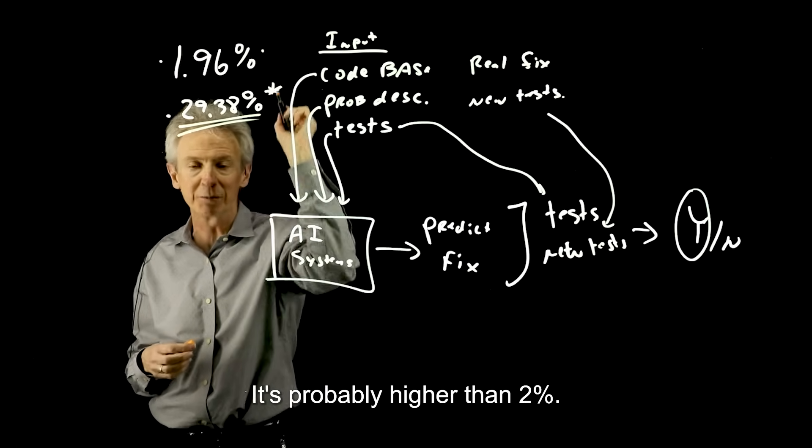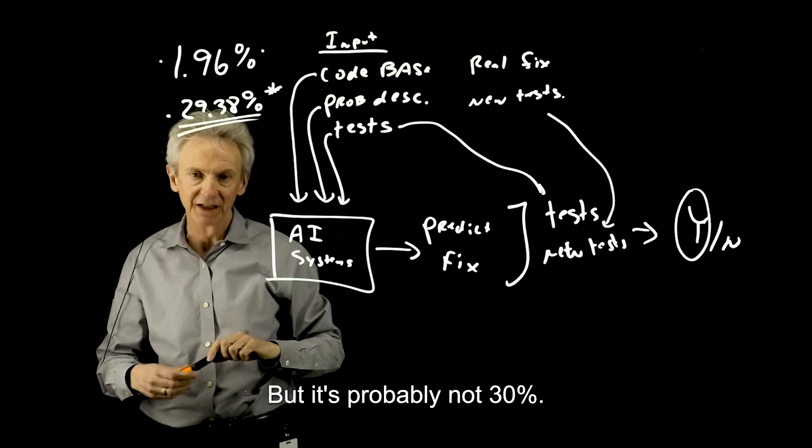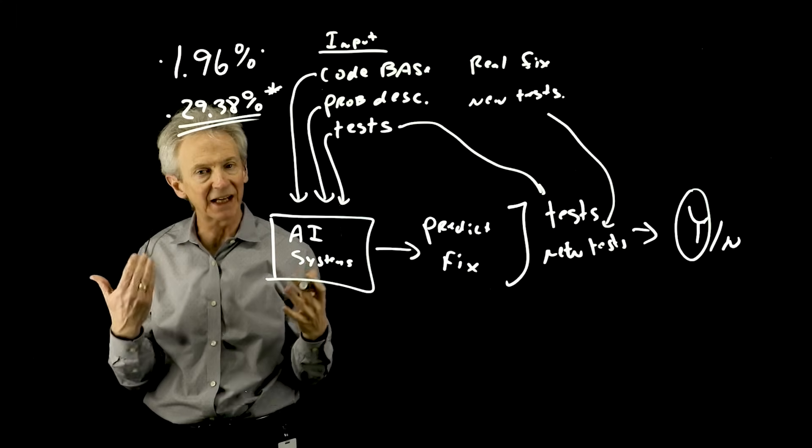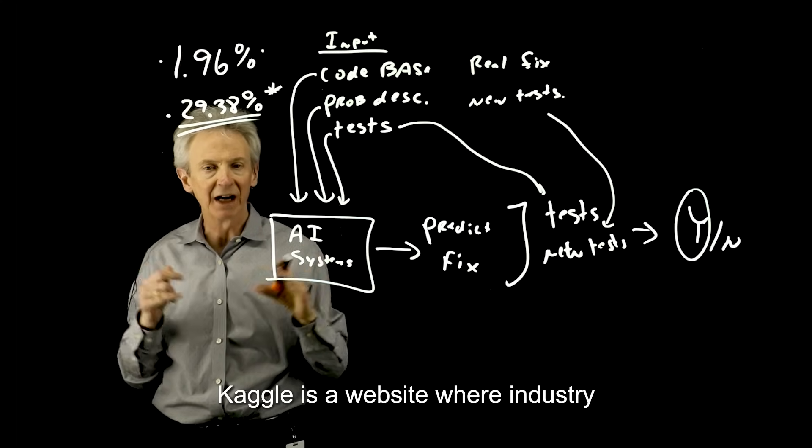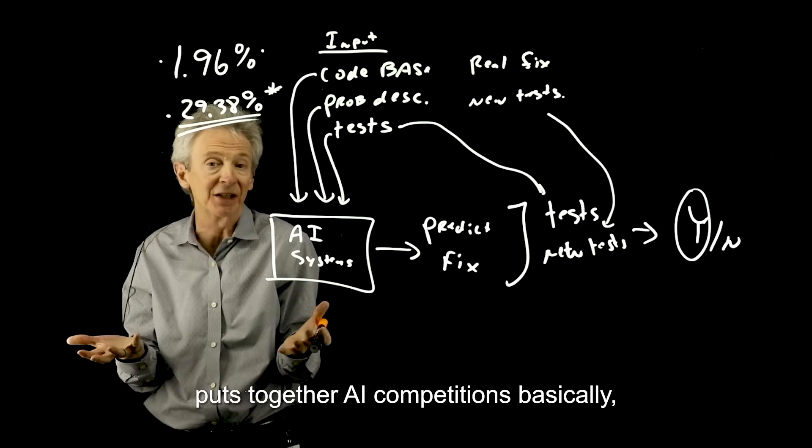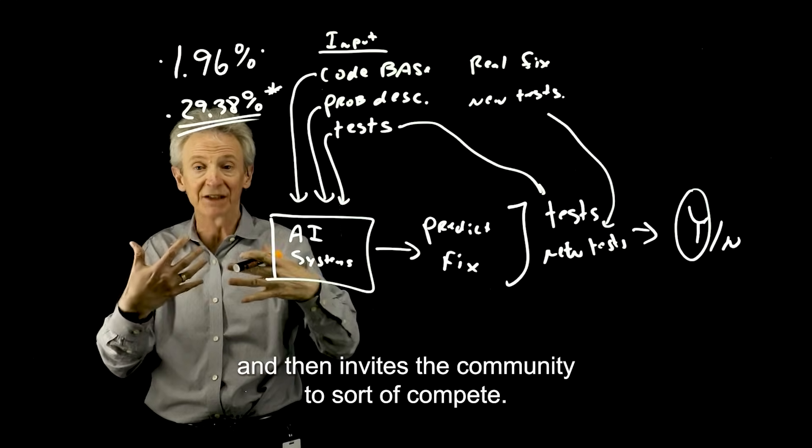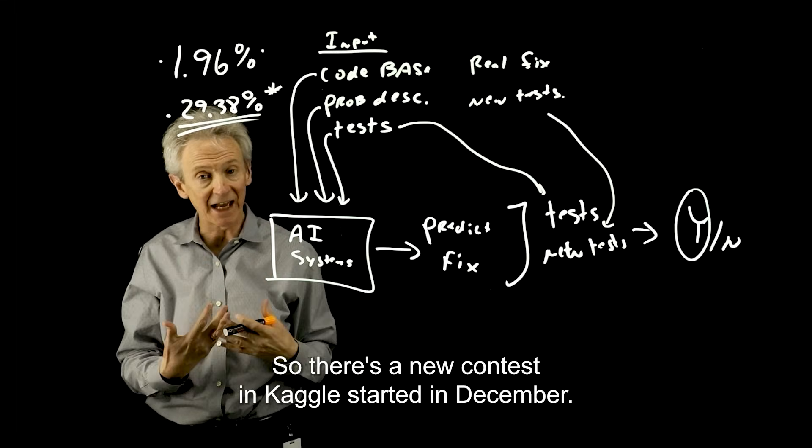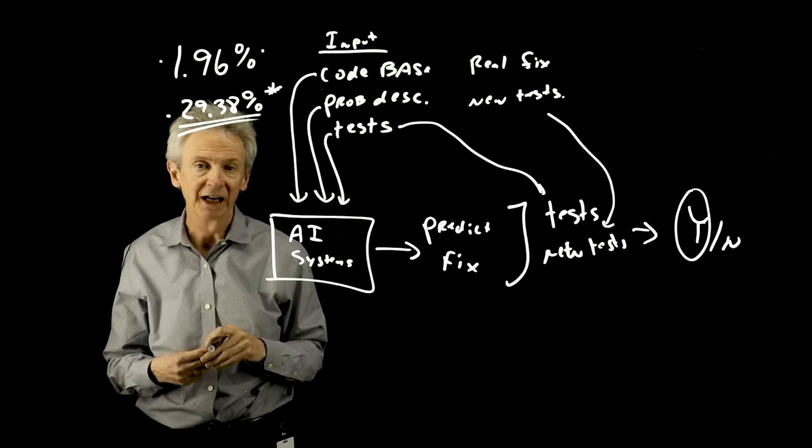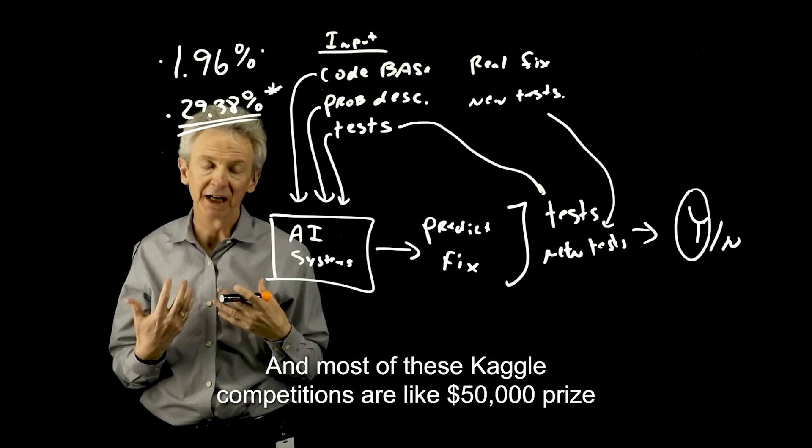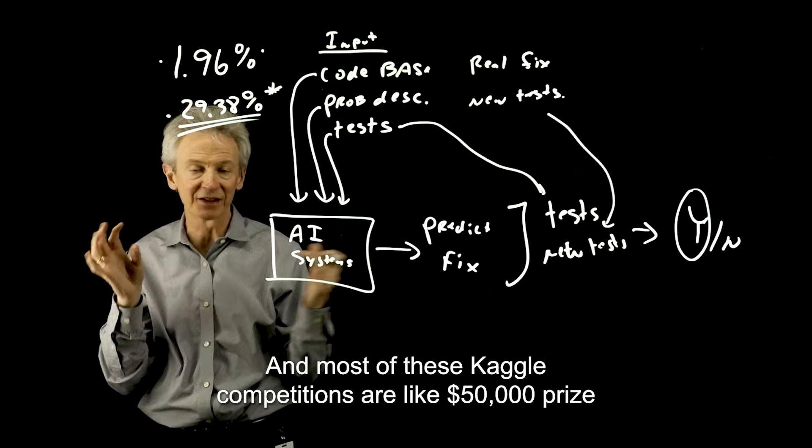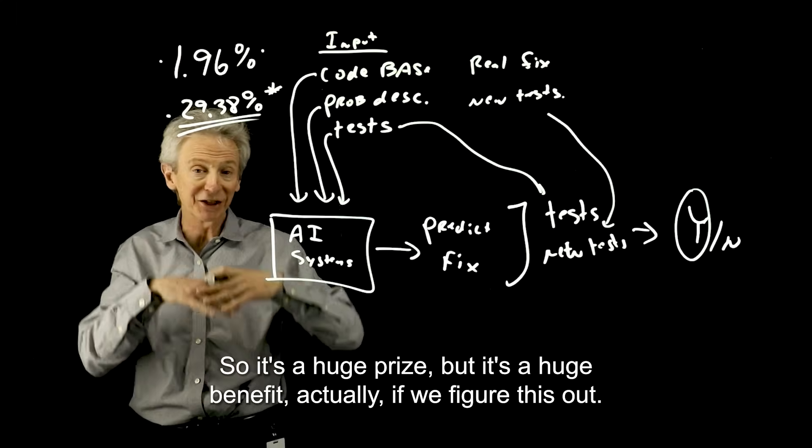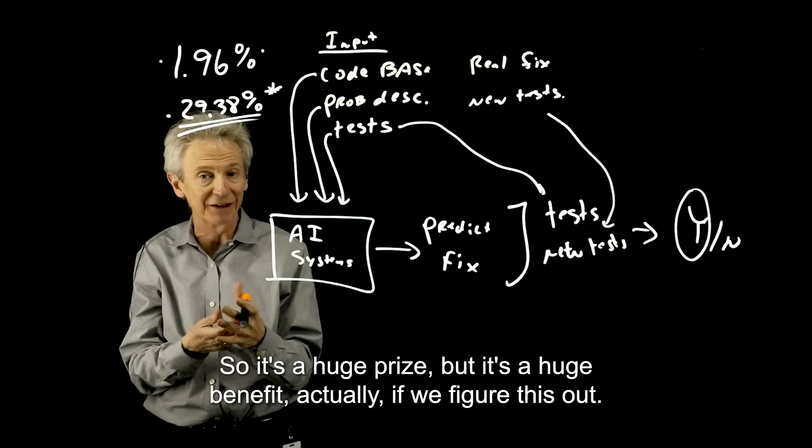And so what's happened since is a Kaggle competition has been launched. Kaggle is a website where industry puts together AI competitions, basically, and then invites the community to compete. So there's a new contest in Kaggle. It started in December. And the prize is $1 million. Most of these Kaggle competitions are like $50,000 prize or something like that. So it's a huge prize, but it's a huge benefit, actually, if we figure this out.